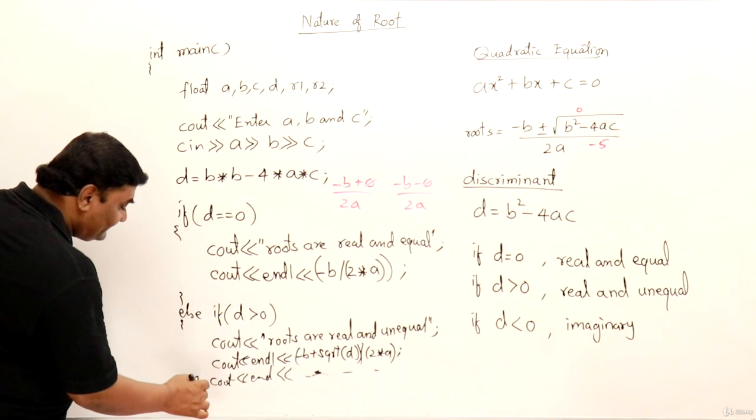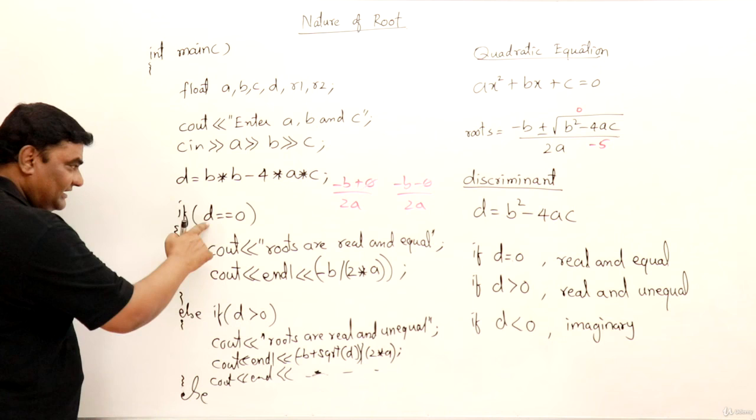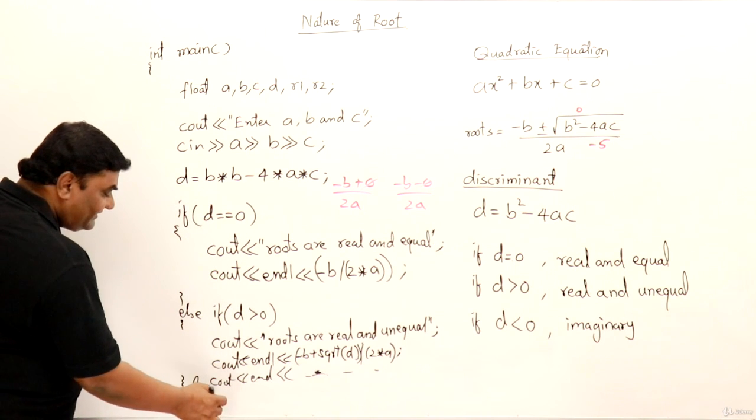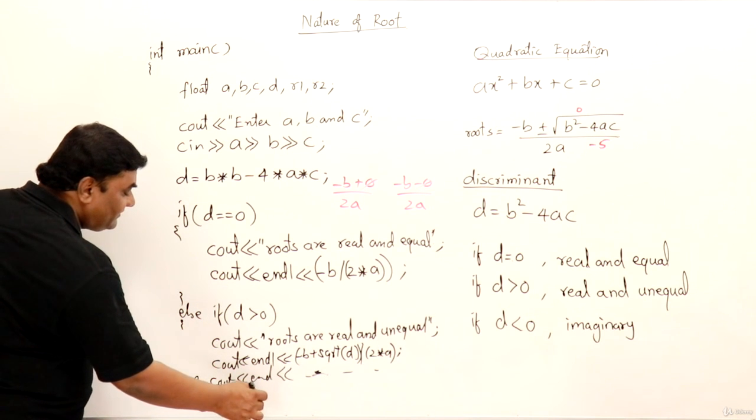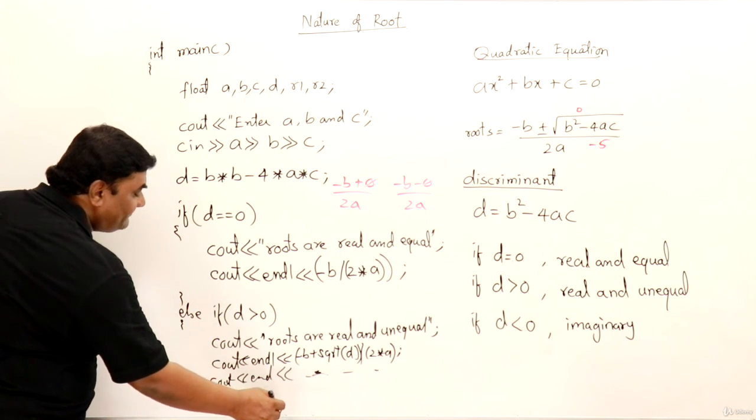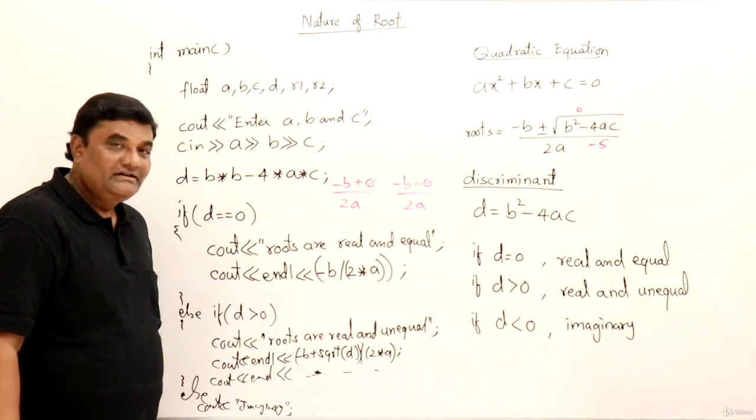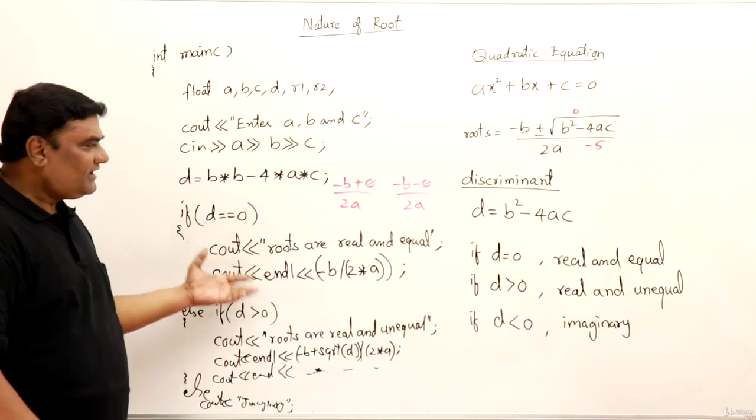Then at last else, just else means if this is not equal, this is not greater than, else. So here else I have only single statement. So say c out imaginary. Right? Imaginary. Just I am scribbling here because there is no space, so you can understand this. Just say imaginary. So I guess you have understood how to write this one.